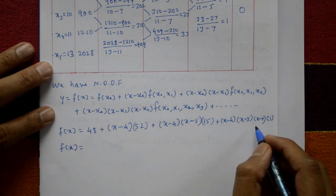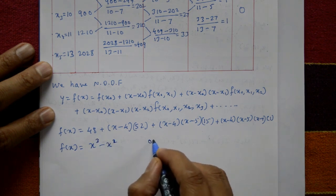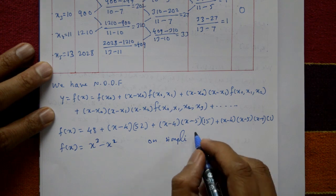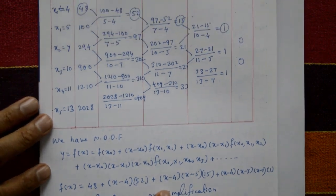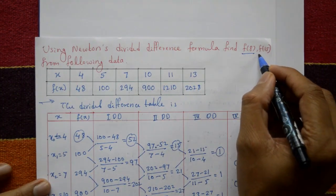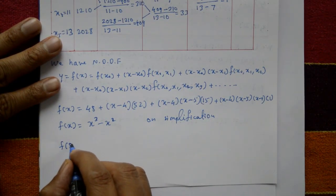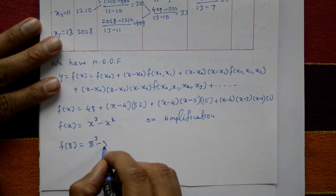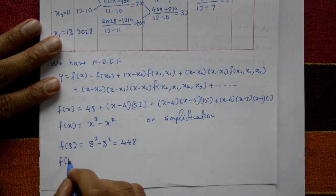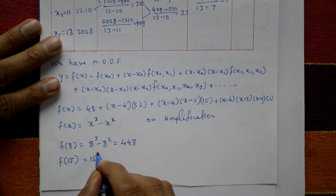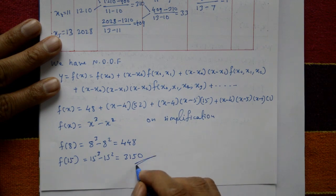On simplification, f(x) = x³ - x². Now substituting: f(8) = 8³ - 8² = 512 - 64 = 448. And f(15) = 15³ - 15² = 3375 - 225 = 3150 ≈ 3115. These are the required solutions.